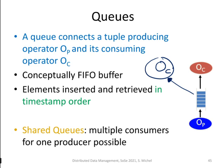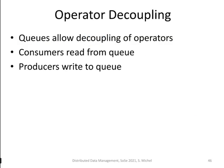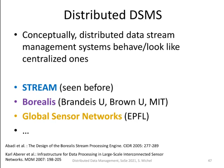This is not a purely push-based situation anymore, though the overall picture remains the same. Queues decouple operators — the consumer reads from a queue and the producer writes to it — and can also notify upstream operators when a new item arrives. Looking at distributed data stream management systems, conceptually they behave similarly to centralized ones. Examples include Stream, Borealis, and Global Sensor Networks, among others.